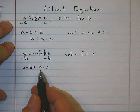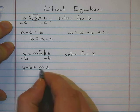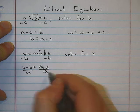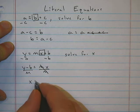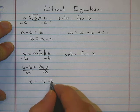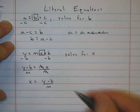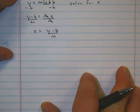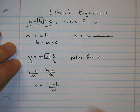X is still not isolated, so we need to get rid of the m. They're multiplied together, so to cancel it out we need to divide both sides of the equation by m. They cancel out there and we're left with x equals y minus b all over m. Let's do one more.